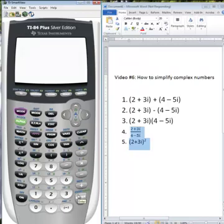You can see how to simplify complex numbers. In your graphing calculator, the first thing you want to do is make sure you know where to locate your imaginary value. Here is the i, and since it's in blue, you have to press second and the decimal button.